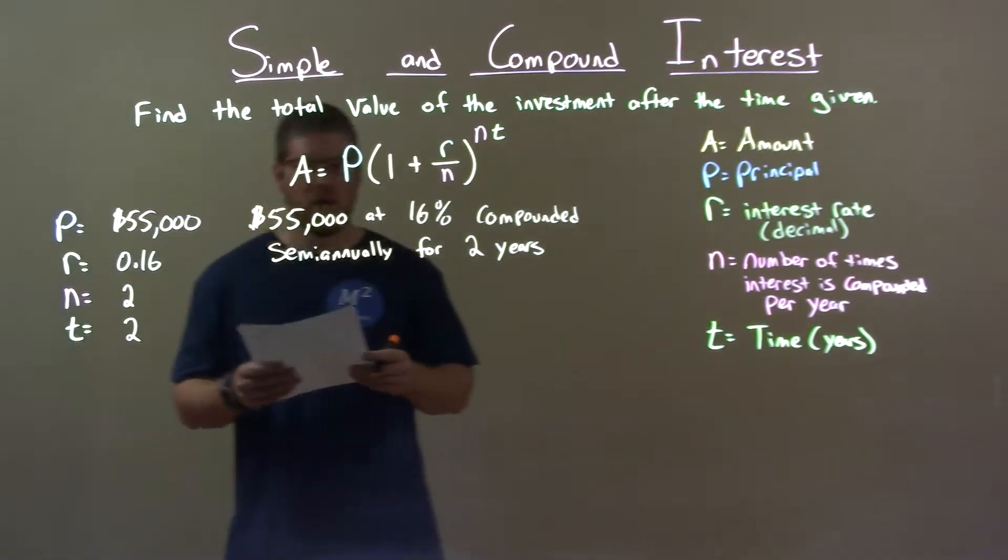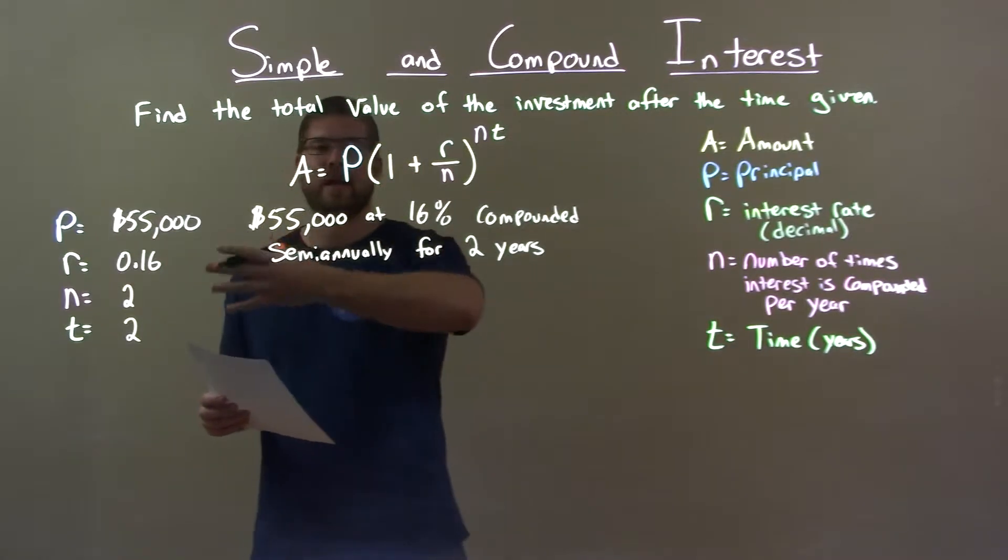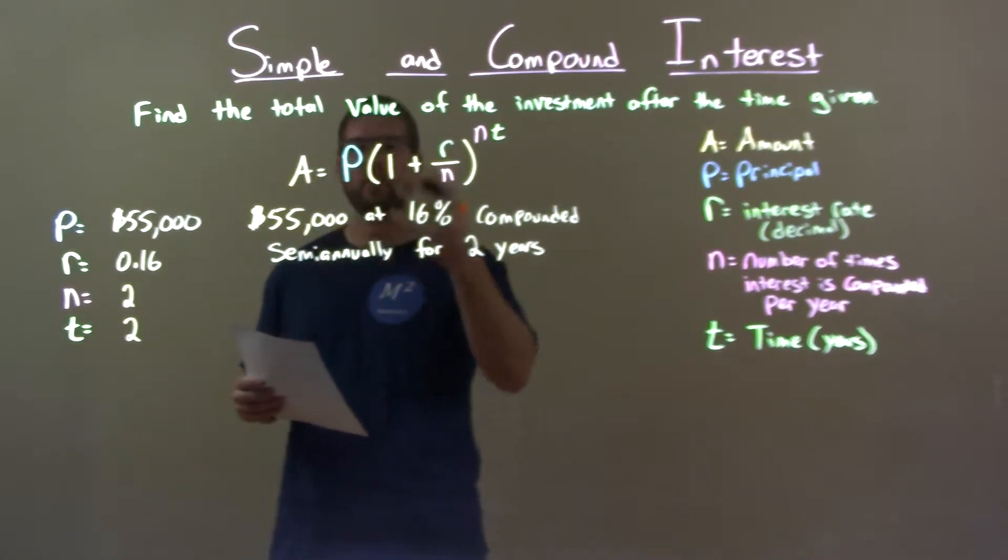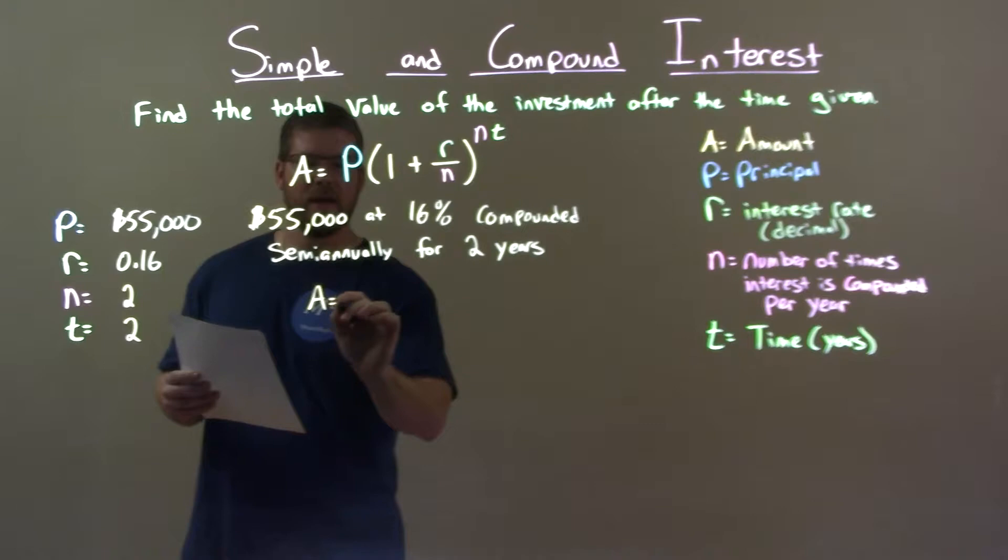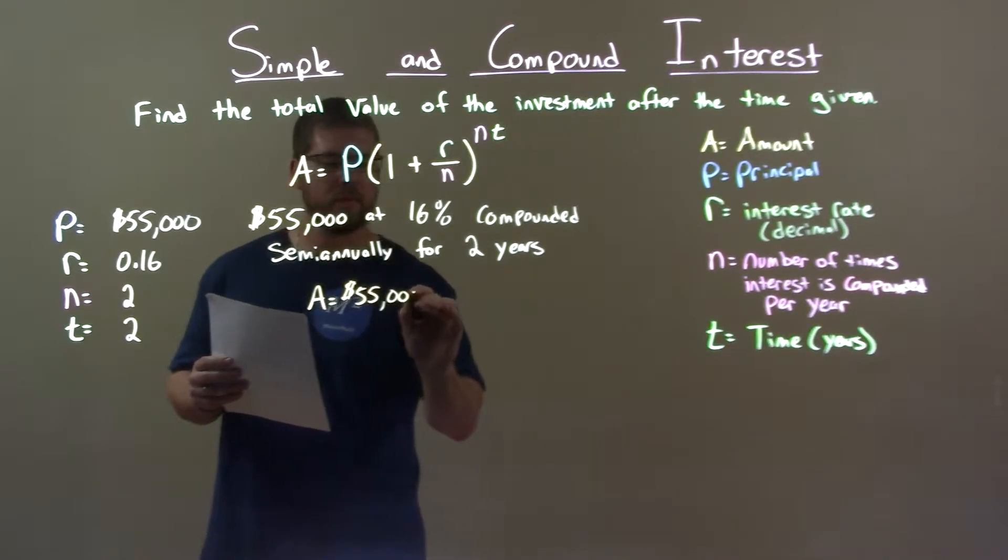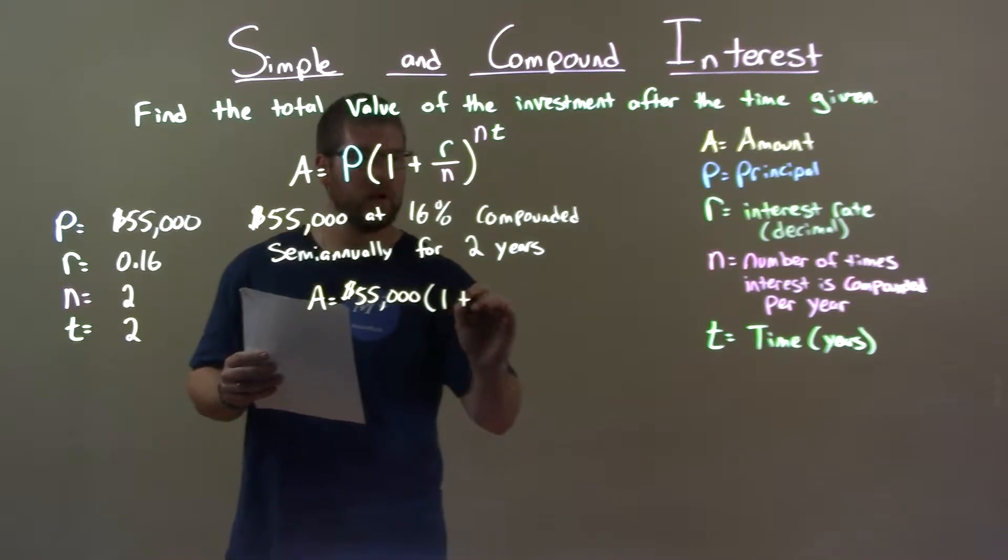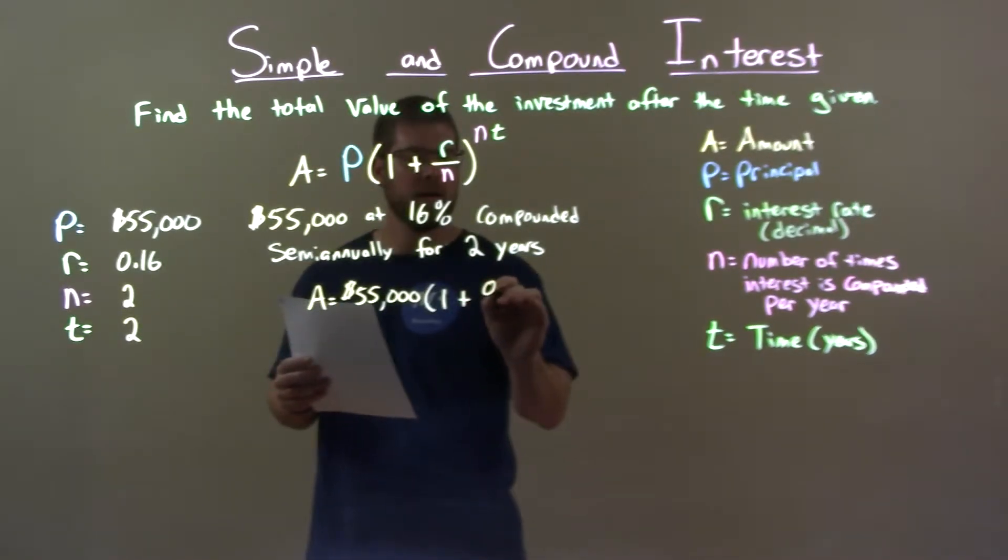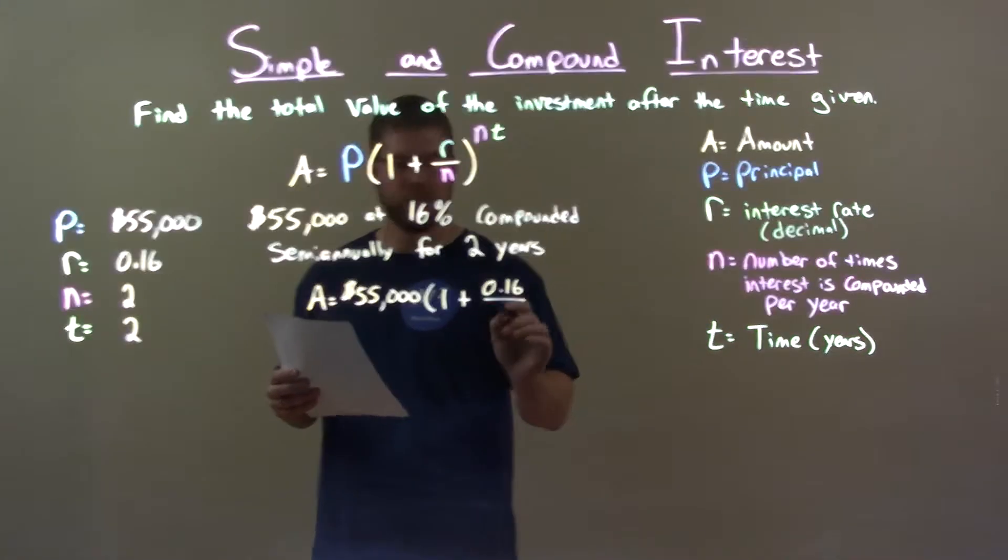With all that information I need to plug that into my formula for compound interest. A equals my principal, $55,000. Multiply that by 1 plus my interest rate as a decimal, 0.16 over the number of times we compound in a year, which is 2.